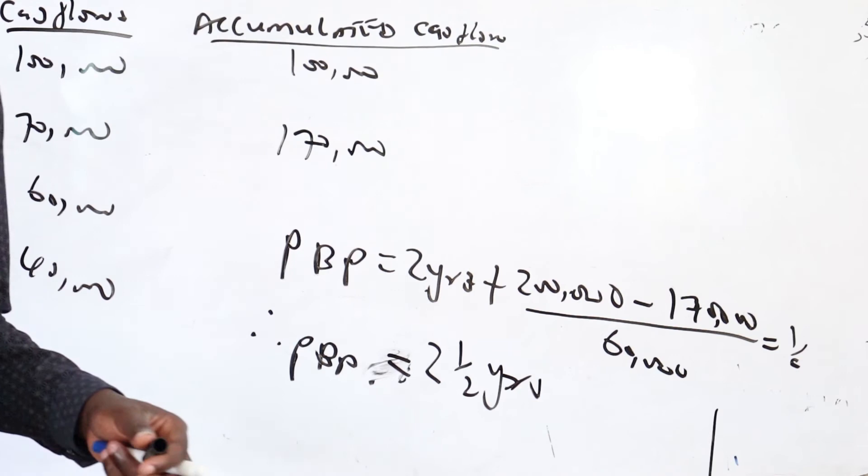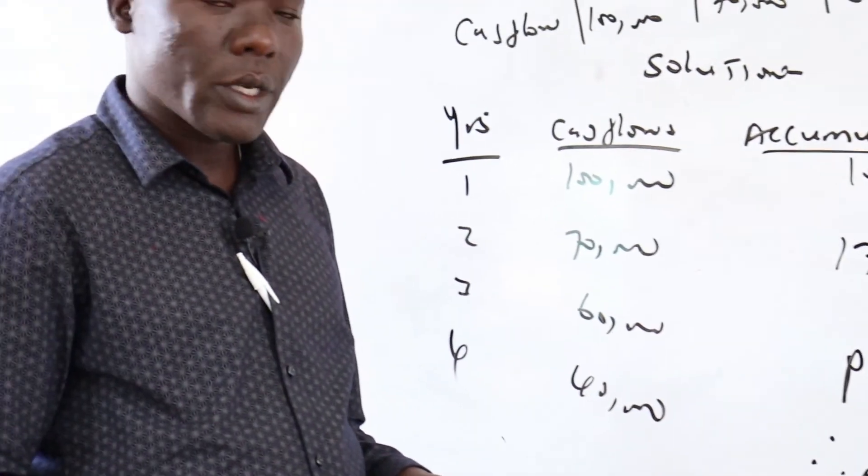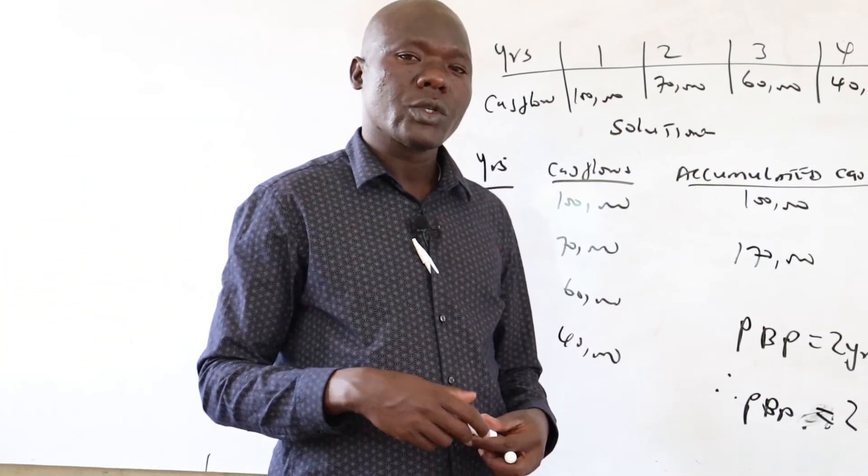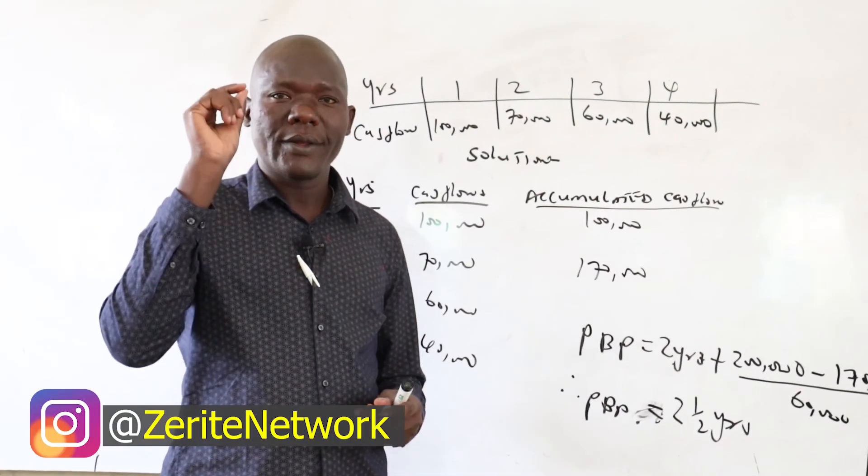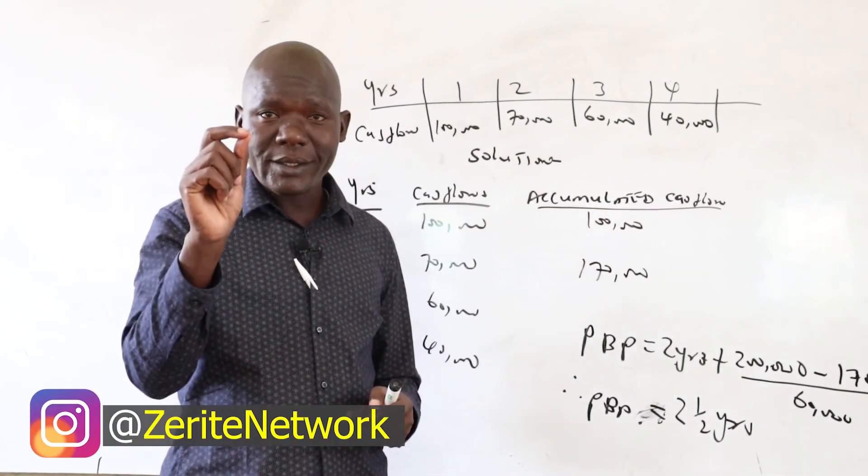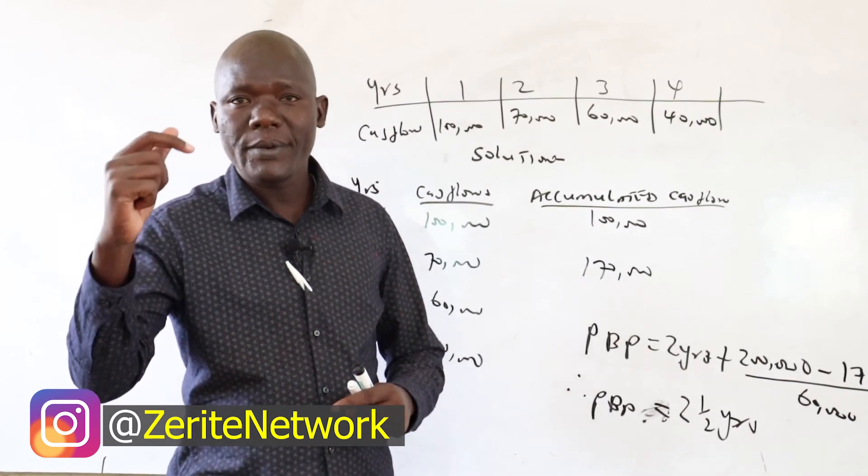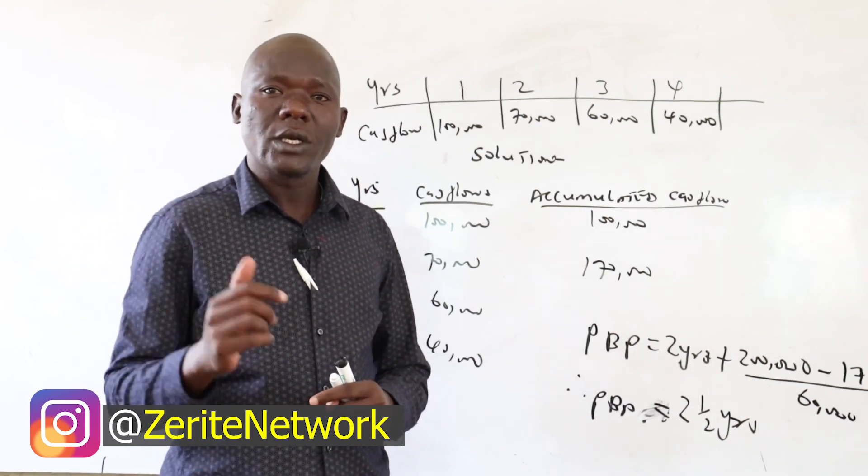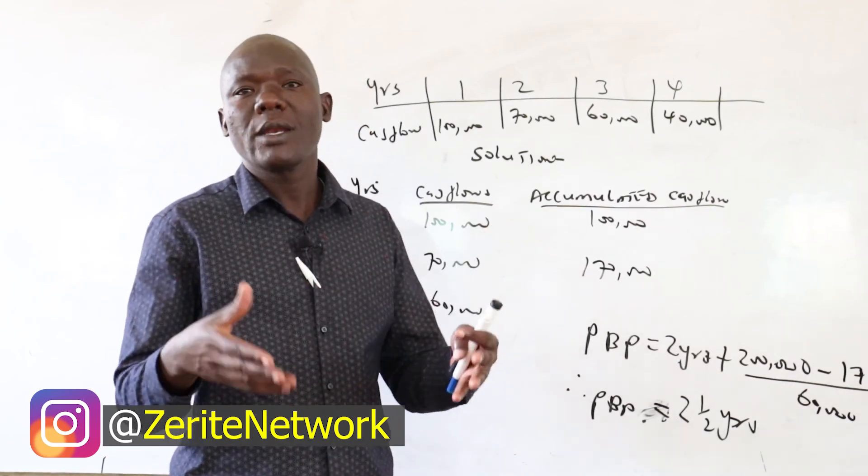That is the answer. So the payback period for this project will be two and a half years. The conclusion will be: we will accept the decision or the project because it is less than the expected period. The payback is two and a half years, but the given period was four years. So we will accept it because we take less time to recoup the money we invested.